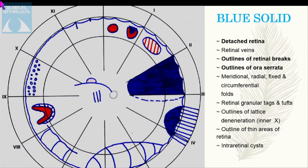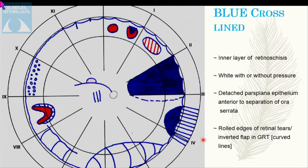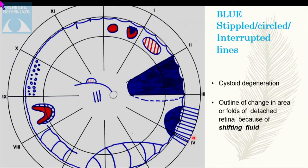Blue is another very important color in fundus drawing. Blue solid is used to document detached retina, retinal veins, outlines of retinal breaks, outlines of the ora serrata, meridionals, retinal granule tags and tufts, outlines of thin areas of the retina, and intraretinal cysts. Blue cross-line is used for inner layer retinoschisis, white without pressure, detached pars plana, anterior to suppression of the ora serrata, and rolled edges or inverted flap in GRT. Blue stippled is used for cystoid degenerations, and interrupted blue lines document changes in area or folds of detached retina due to shifting fluid.